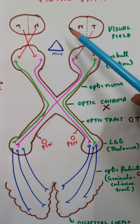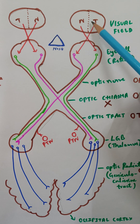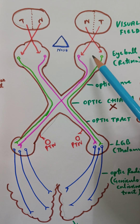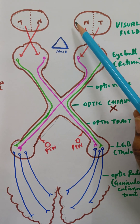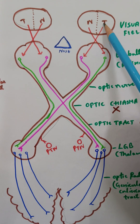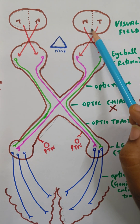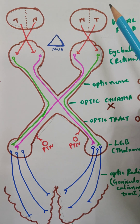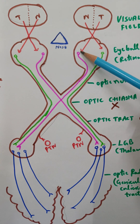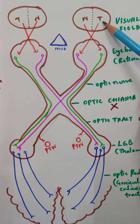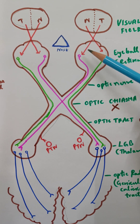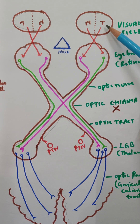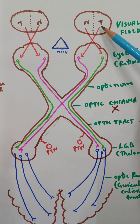This is the visual pathway. The nose here is for representation purposes — this is the visual field. On either side of the nose you have the eyeball, which is concerned with vision. For the right eye, this is the nasal visual field, which is very close to your nose, and this is the temporal visual field. The light always travels in a straight line — light from the temporal visual field falls onto the nasal retina, and from the nasal visual field, light falls onto the temporal retina.